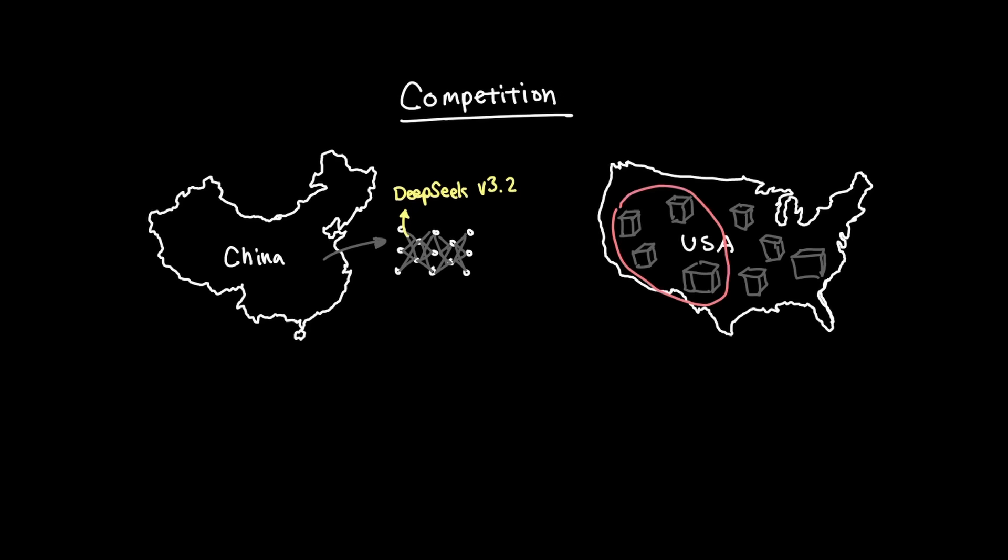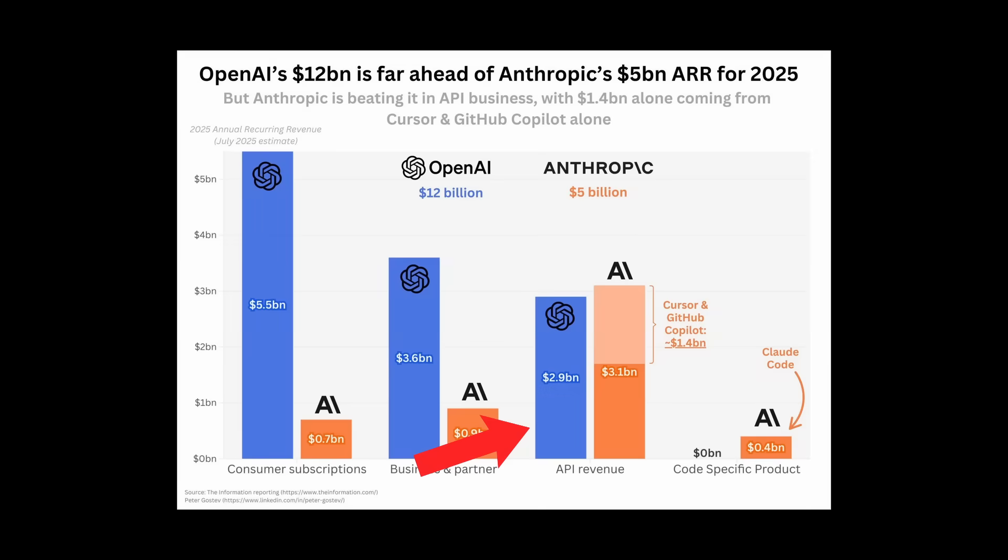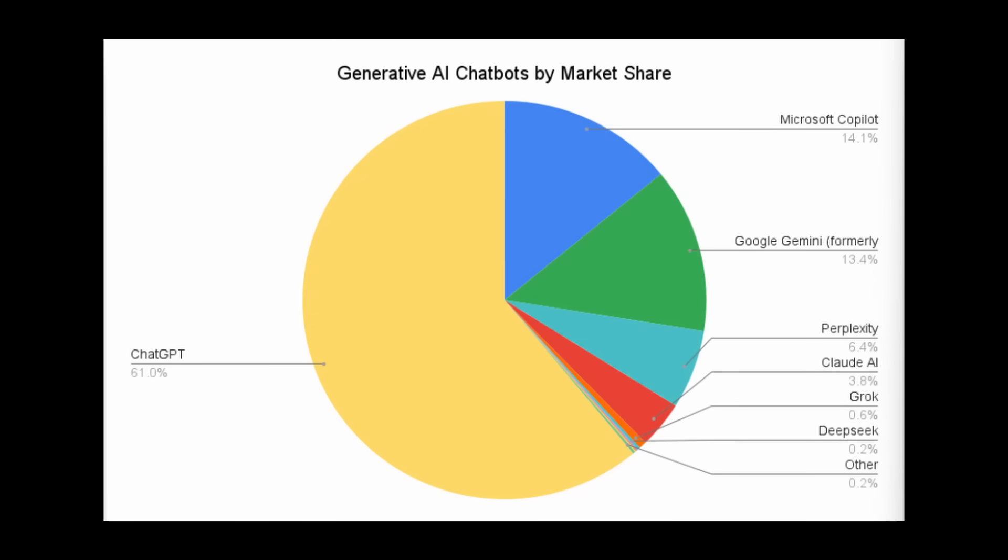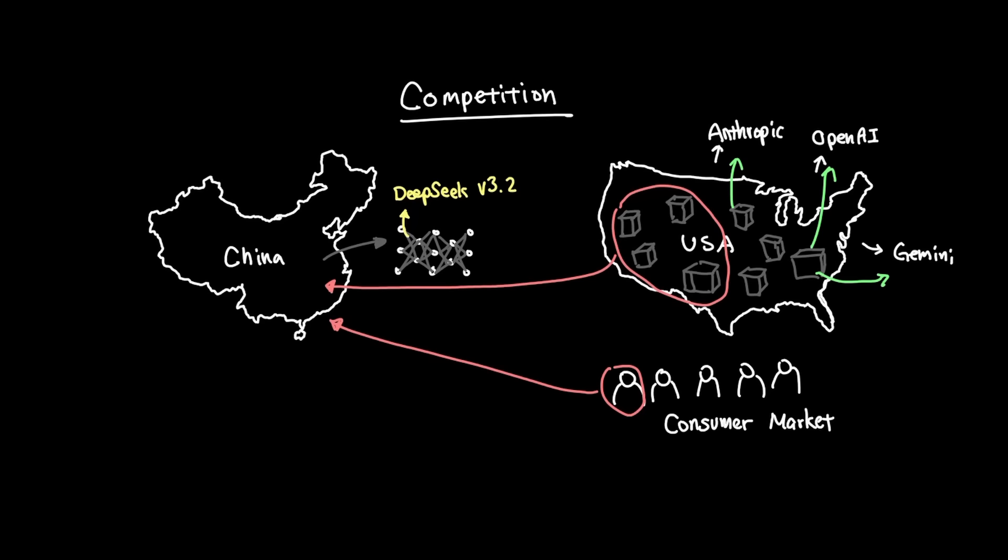First, they steal the enterprise market from the US, which prevents frontier labs like Anthropic, OpenAI, and Gemini from making money from enterprise users. And we know that API revenue makes up one of the largest portions of these companies' revenue. So even though China can't directly compete in the consumer market, they are certainly taking away the ability for US companies to make money from enterprise users that have higher revenue per user or ARPU.